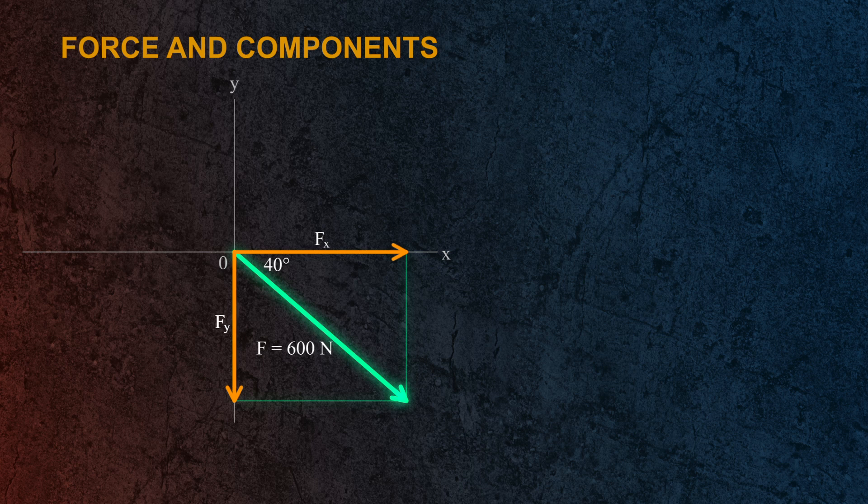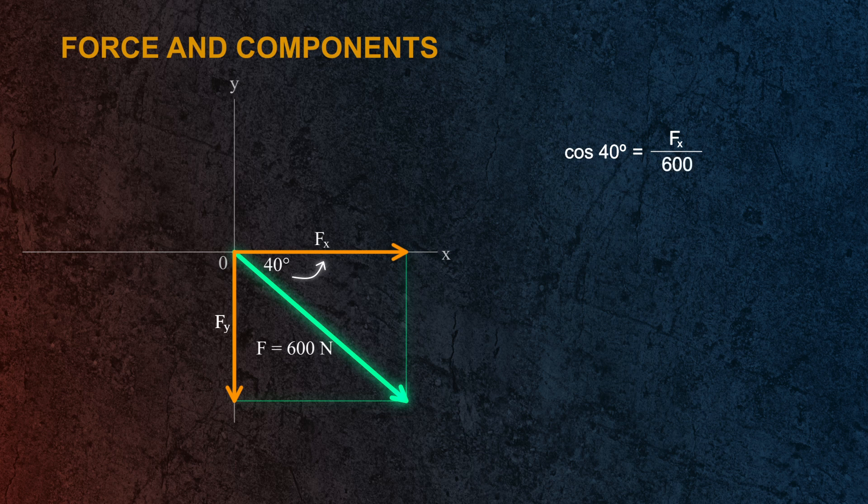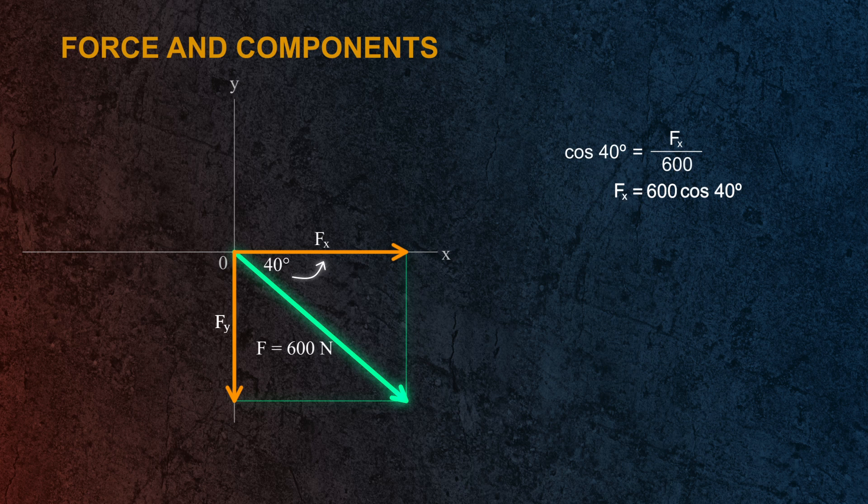Let's start by solving for the x component. The x component lies adjacent to the given angle. Remember, cosine gives us the ratio of adjacent side to the hypotenuse. So cos 40° is equal to Fx divided by the force 600 newtons. Or Fx is equal to 600 newtons times cosine of 40 degrees. That would give us 459.6 newtons.